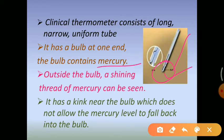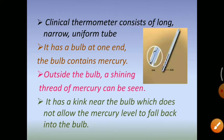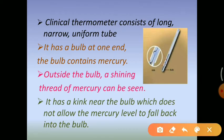You can easily observe a shiny part — this shiny part is mercury — and outside the bulb a shiny thread of mercury is visible. One more characteristic of a clinical thermometer is it has a kink near the bulb, which does not allow the mercury level to fall back into the bulb. This is magnified in the picture so you can see this part carefully.